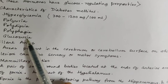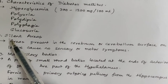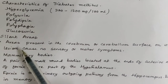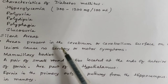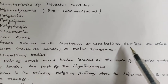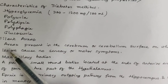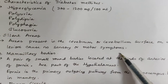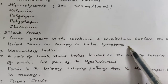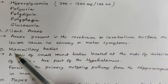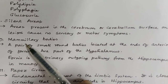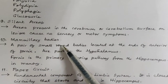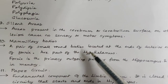What do you mean by silent areas of the brain? These are areas present on the cerebrum or cerebellum surface on which lesions cause no sensory or motor symptoms. Next: what are mammillary bodies? These are a pair of small nipple-shaped round bodies located at the ends of the anterior arches of the fornix, and they are part of the hypothalamus.